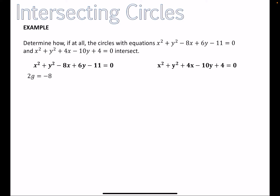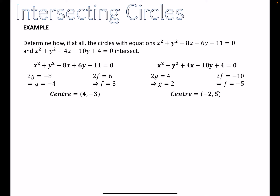Working through the first equation: 2g = −8 so g = −4; 2f = 6 so f = 3, giving center (4, −3). For the second: 2g = 4 so g = 2; 2f = −10 so f = −5, giving center (−2, 5).